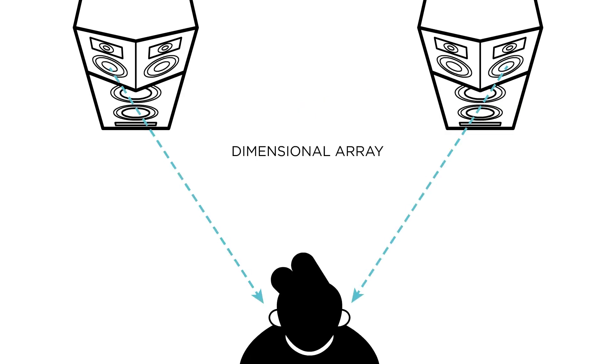Each L800 speaker uses what we call the dimensional array to create a signal that is the exact opposite of the interaural crosstalk signal coming from the other speaker. When both signals arrive at your ear at the same time, they cancel each other out, leaving only the good or true stereo signal.